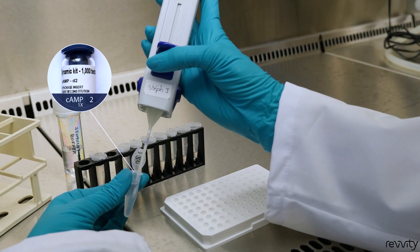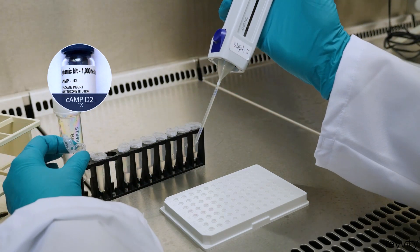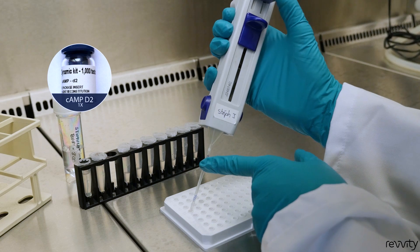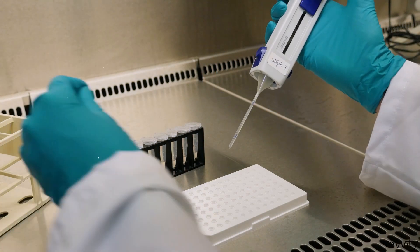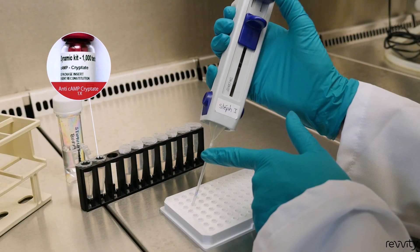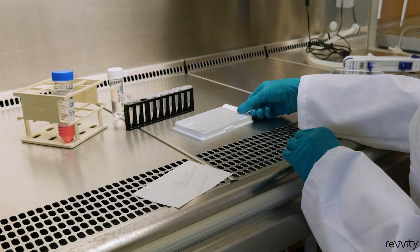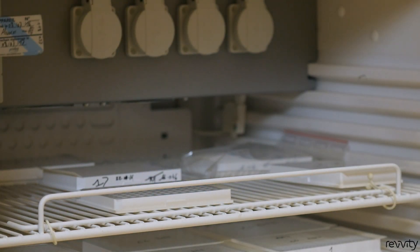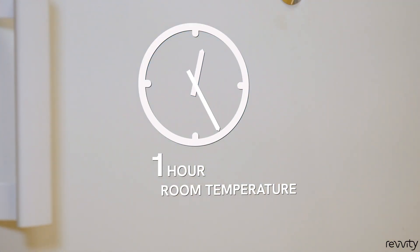Remove sealer and add first 5 microliters of labeled cyclic AMP, then 5 microliters of anti-cyclic AMP antibody. Incubate 1 hour at room temperature. And that's it.